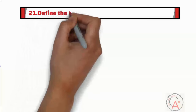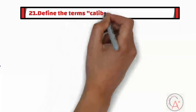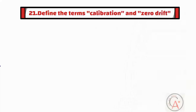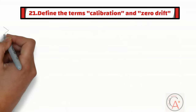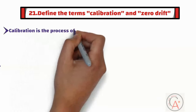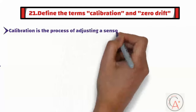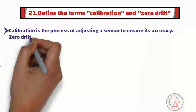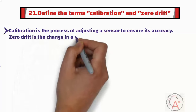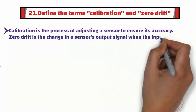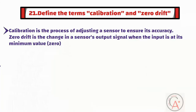The twenty-first question is: define the terms calibration and zero drift in the context of sensors. Calibration is the process of adjusting a sensor to ensure its accuracy. Zero drift is the change in a sensor's output signal when the input is at its minimum value or zero.